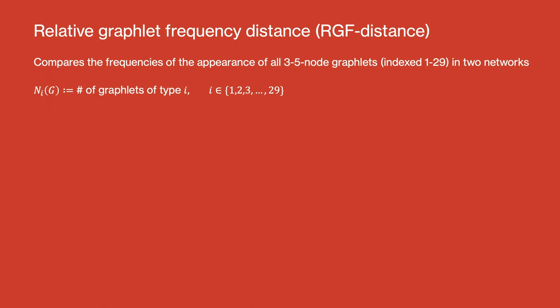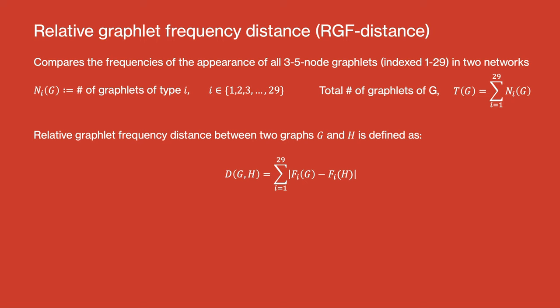For a general case, let N_i stand for the number of graphlets of type i, where i goes from 1 to 29, and T stand for the total number of graphlets. Then, the relative graphlet frequency distance between two graphs, G and H, can be defined as the absolute of the difference of f_i(G) minus f_i(H) summed over all i's. This f_i is defined as minus logarithm of N_i by T.